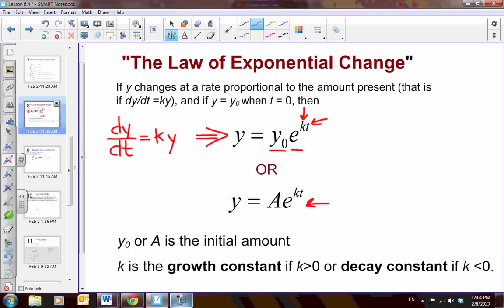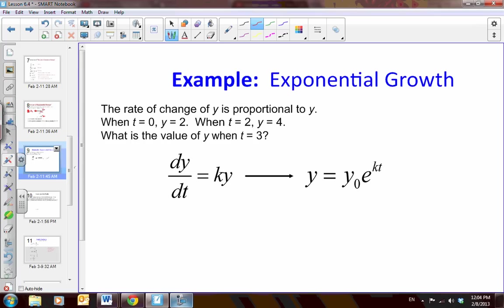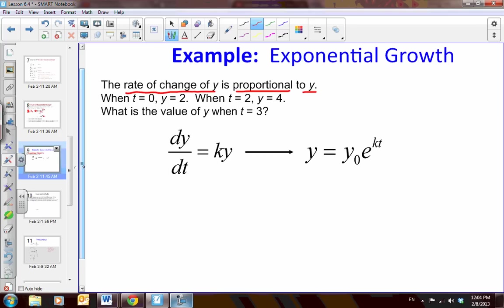So now let's apply this law. Now here we have a problem where we know the rate of change of y is proportional to y. Well, great, that's what we've been talking about, dy dt equals ky. Well, since we've already proven that this is equal to y, the initial value, e to the kt, we can use the information given to find this value.